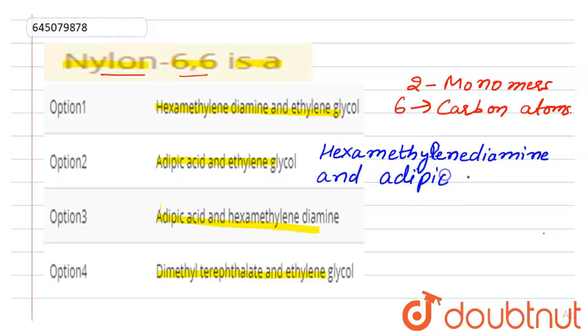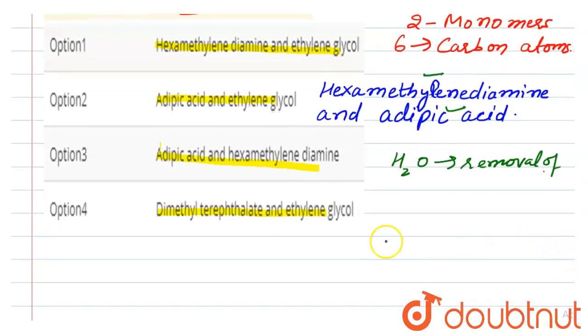Adipic acid. So Nylon-6,6 is a condensation product of hexamethylenediamine and adipic acid, with the removal of the water molecule, removal of H2O. So let's see how Nylon-6,6 is made.